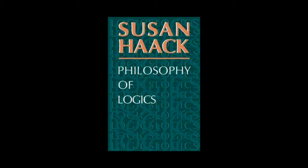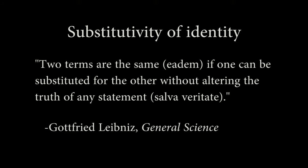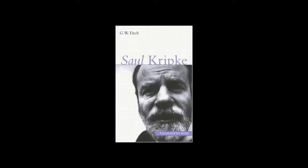Quine objects to de re modality with the following argument. Quine states that premises 1 and 2 are true, while 3 is false. Yet if 50 equals the number of states, then we should be able to substitute one term for the other with no change in the resulting statement's truth value. The problem here, as Saul Kripke pointed out, is that there is a difference between rigid and non-rigid designators. A rigid designator picks out the same thing in all worlds. The square root of 16 picks out the number 4 in all possible worlds. The number of states in the US picks out different values in different possible worlds. When we are doing modal logic, two equal terms can only be substituted for one another if and only if either one is a rigid designator for the other, or if they are both rigid designators for a third term. Once we recognize this distinction, the problem disappears.